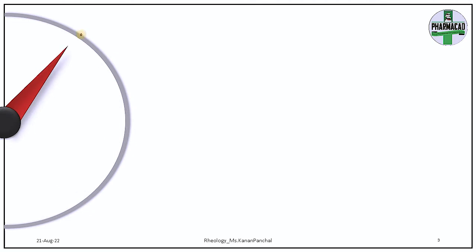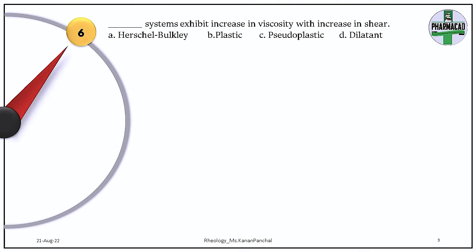Question 6. Which systems exhibit an increase in viscosity with increase in shear stress? The answer is dilatant systems. Dilatant systems exhibit increase in viscosity with increase in shear stress. In pseudo-plastic, viscosity will decrease, and in Herschel-Bulkley also, viscosity will decrease when you increase the shear stress.